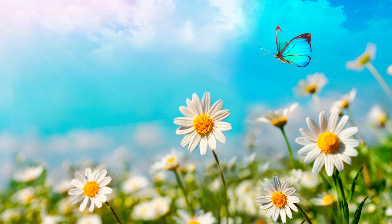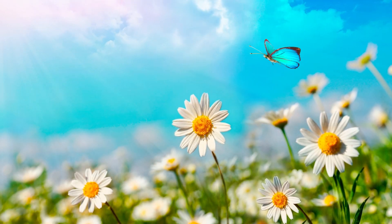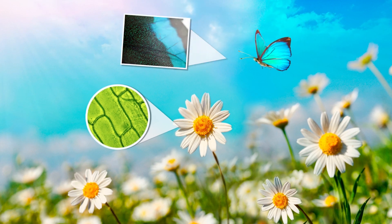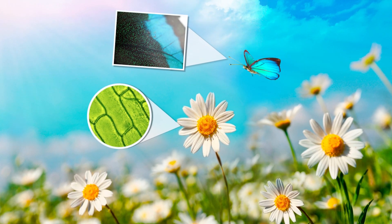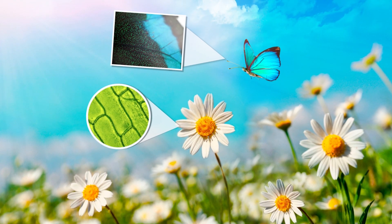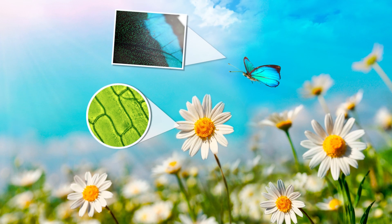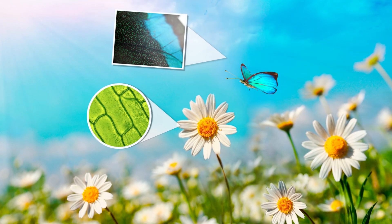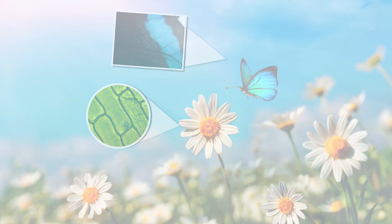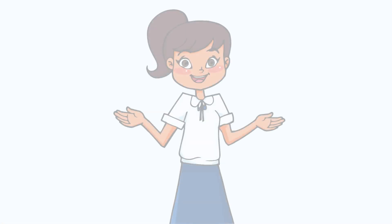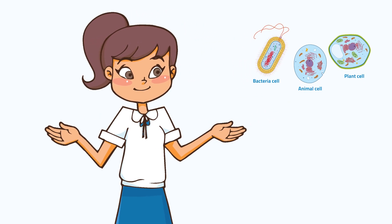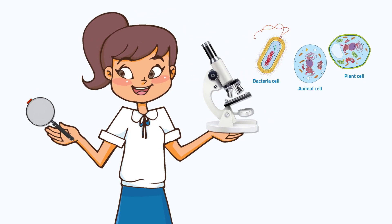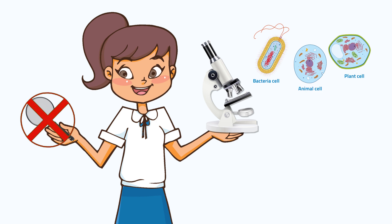All living organisms are composed of one or more cells. Cell is considered as the functional unit of life because this is where many life processes happen. Cell size varies from one type to another. It is so small that you can't observe it with an unaided eye.